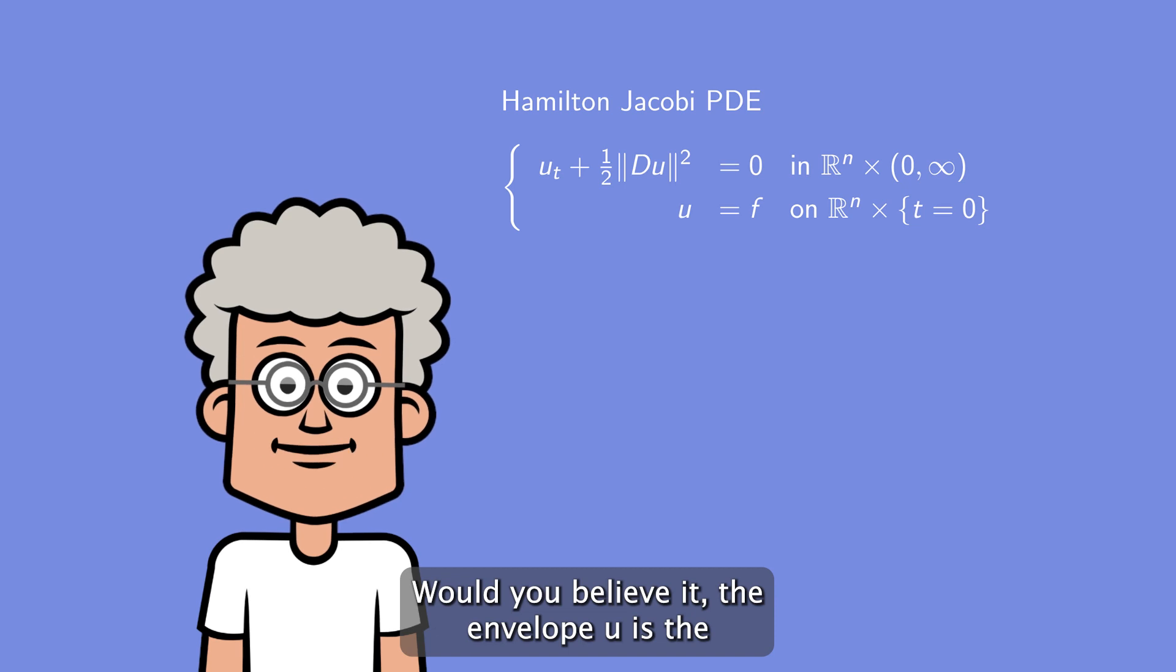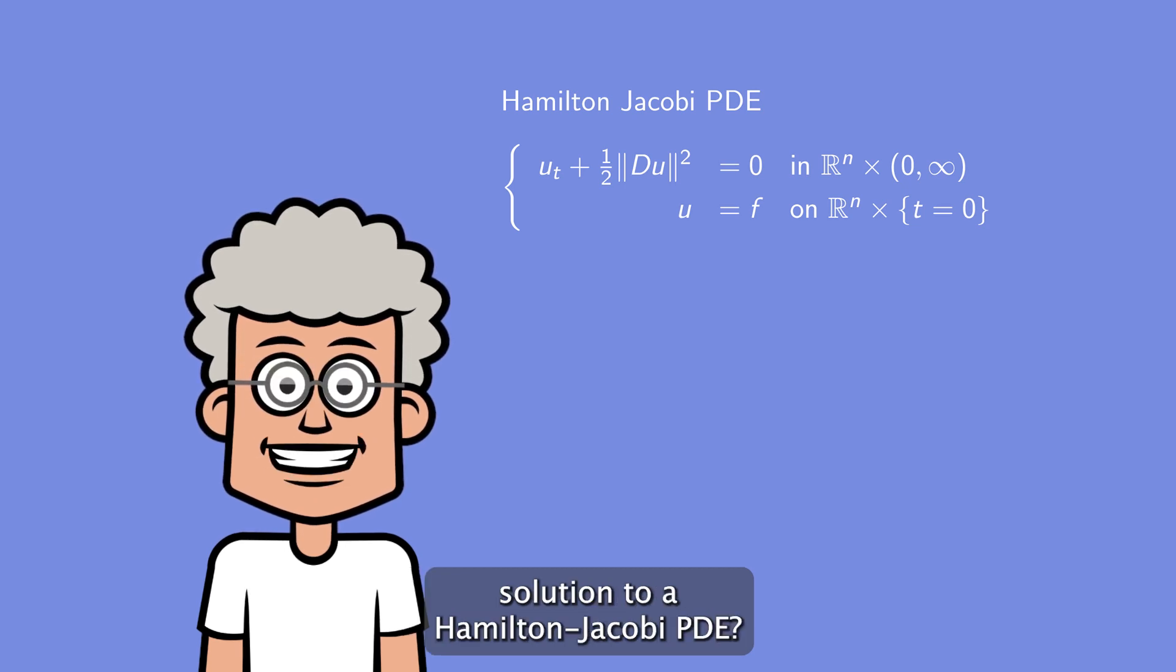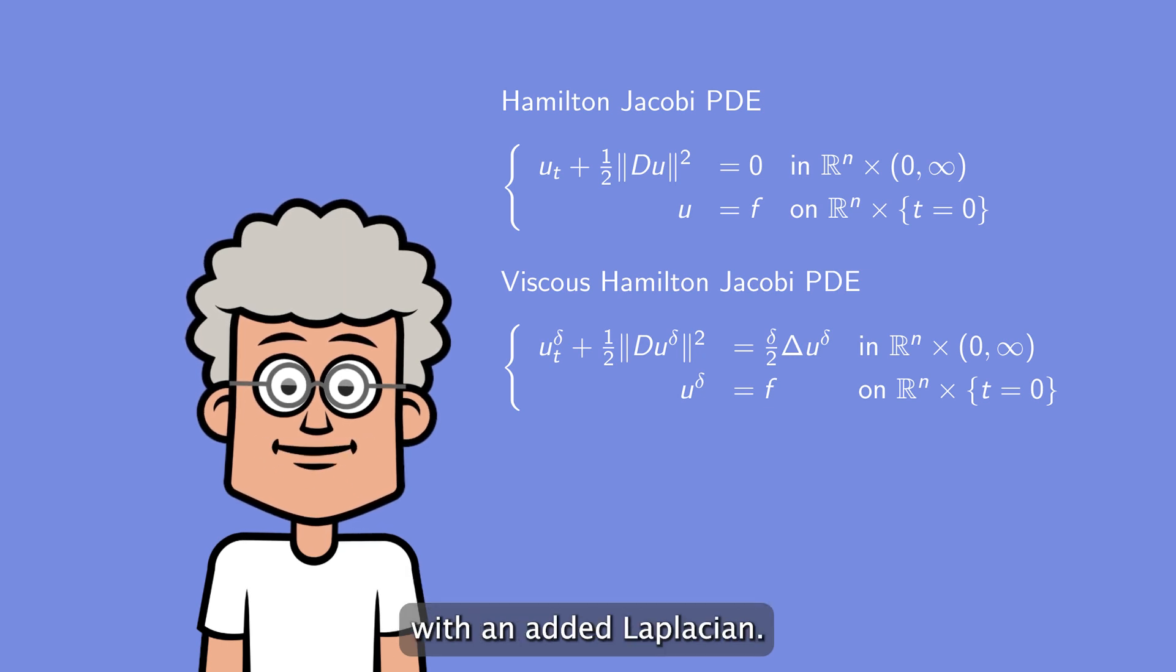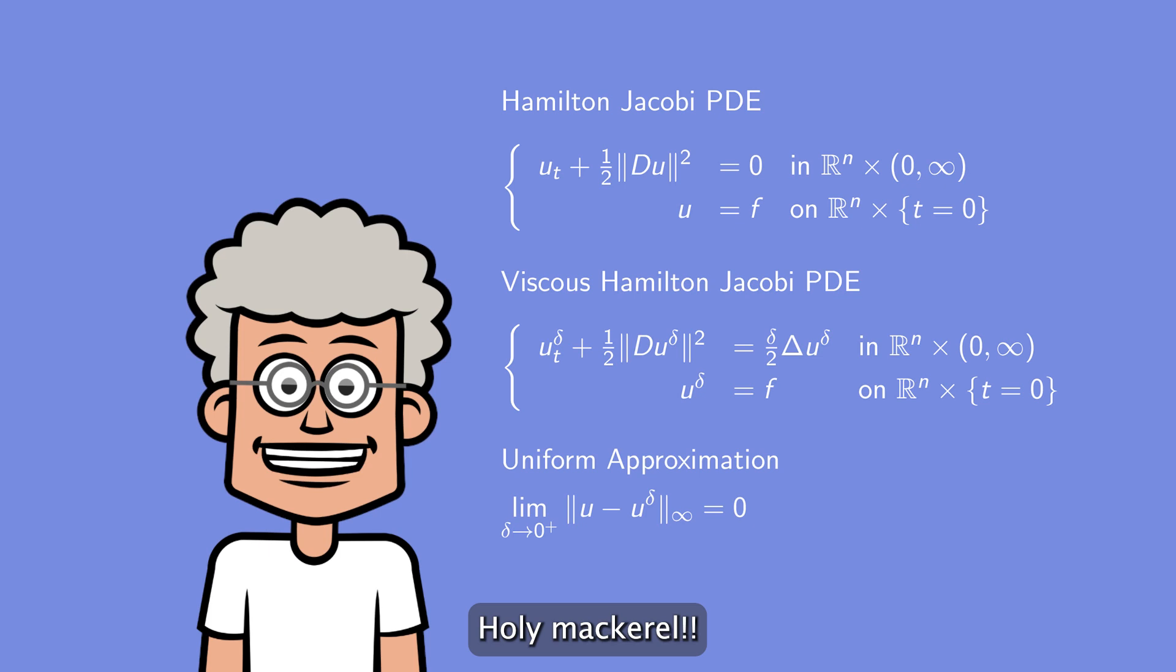Would you believe it? The envelope u is the solution to a Hamilton-Jacobi PDE. Ergo, we get a smooth estimate of u by solving with an added Laplacian. This is beautiful. Holy mackerel.